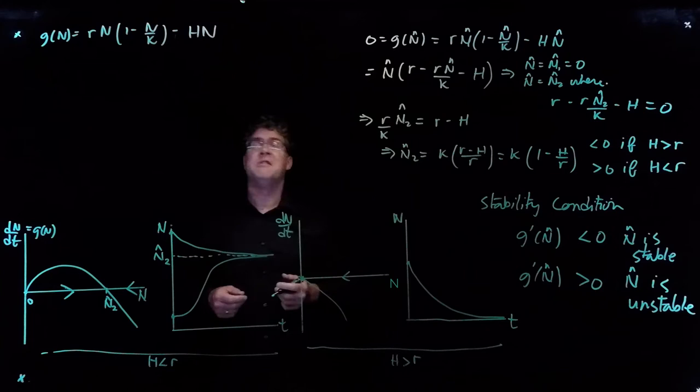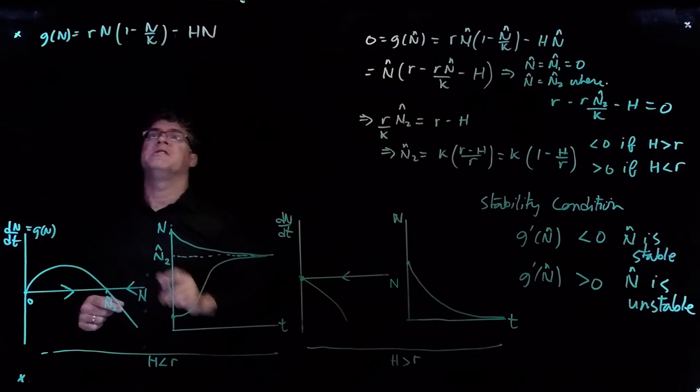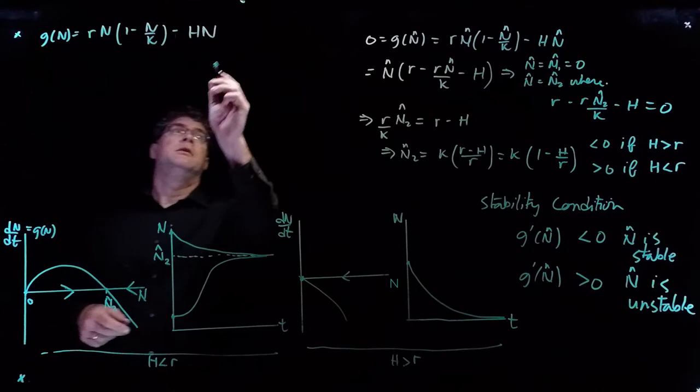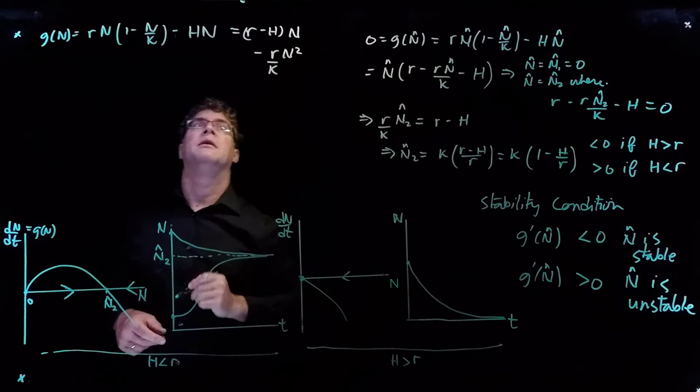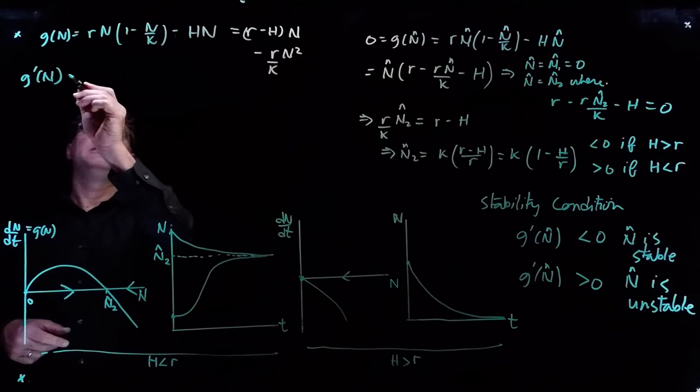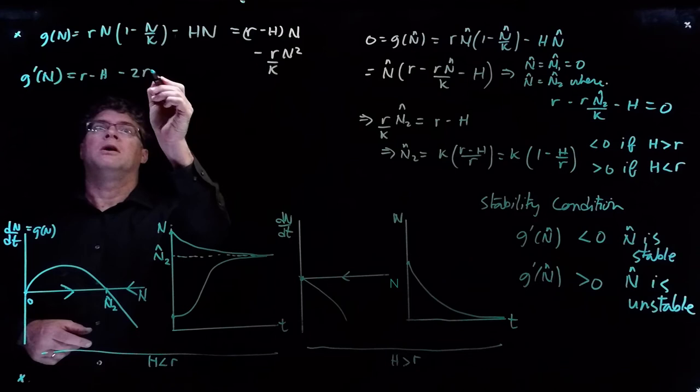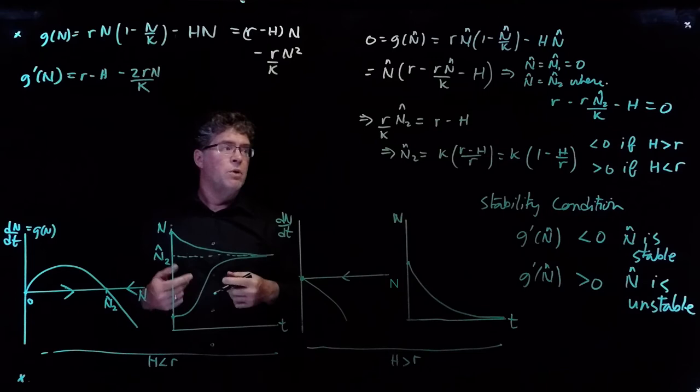Let's evaluate the stability condition. We have our function g — logistic growth with harvesting — and we want to calculate g-prime. It helps to write g as (r minus h)·n minus r·n² over K. Taking the derivative term-wise gives g-prime of n equals r minus h minus 2r·n over K.